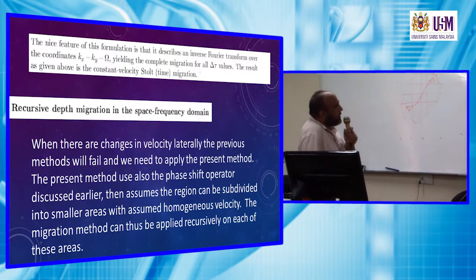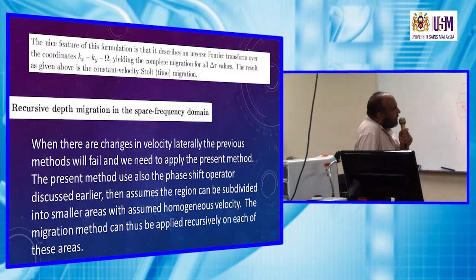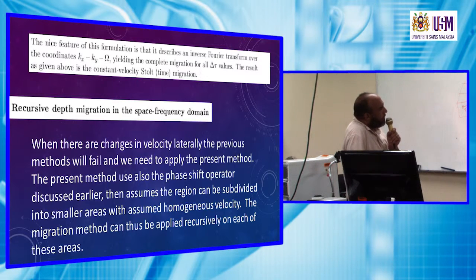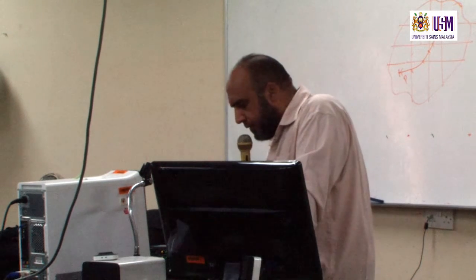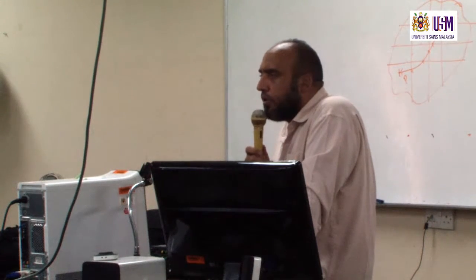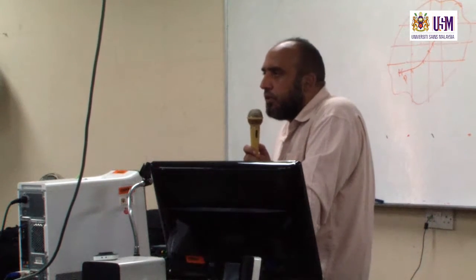The nice feature of this formulation is that it describes an inverse Fourier transform over the coordinates KX, KY, Lambda, yielding the complete migration for all delta T values. The result is the constant velocity Stolt time migration. It is important to note that we don't require the entire section to have constant velocity — we can assume certain regions large enough to exhibit constant velocity.